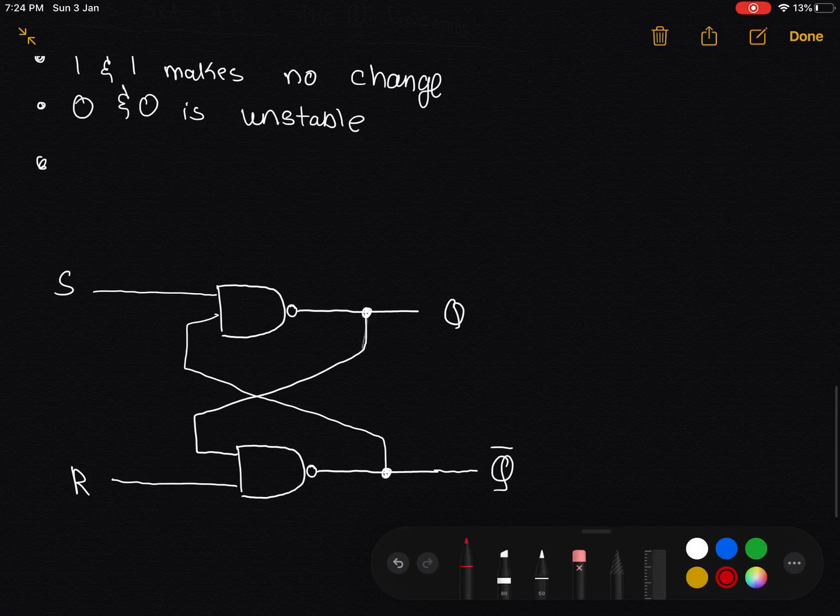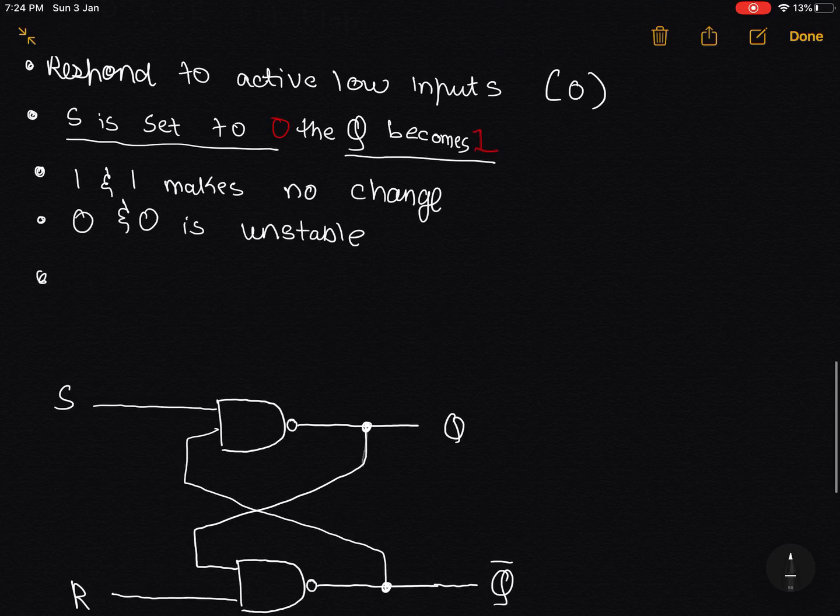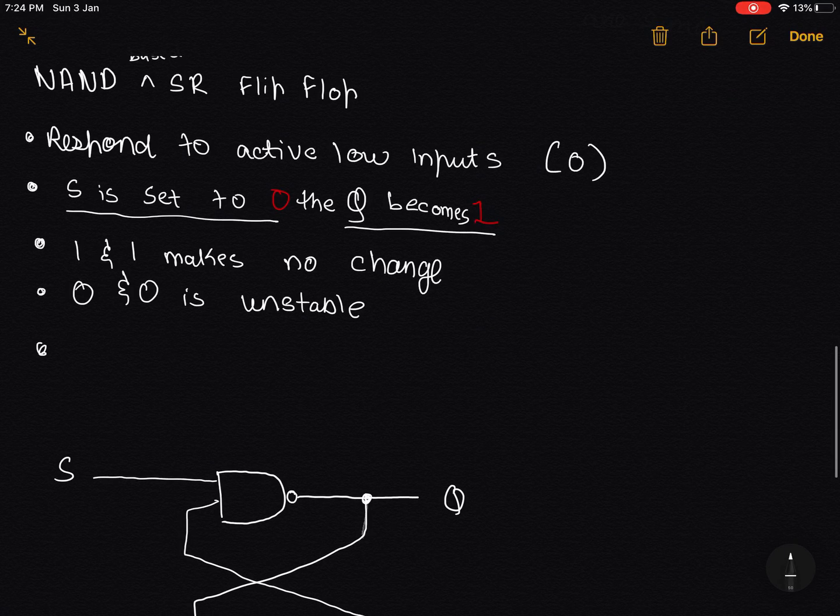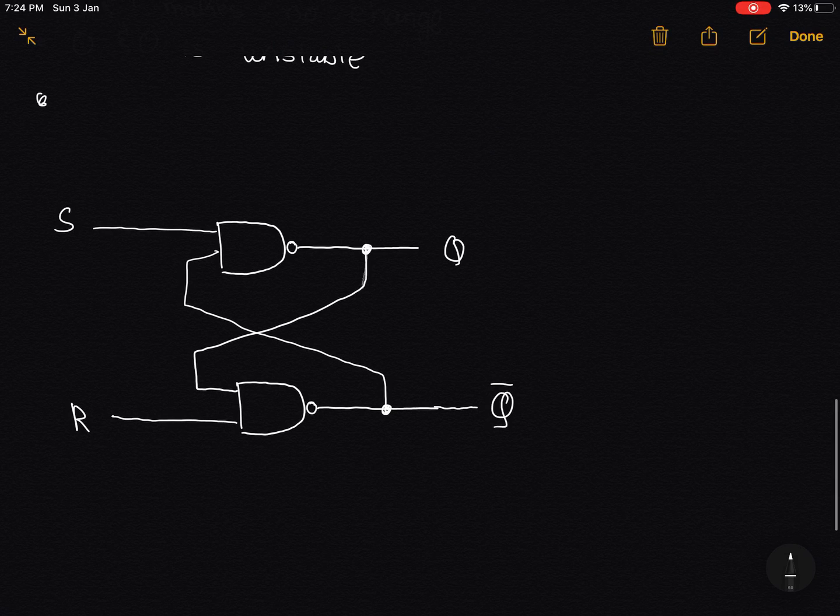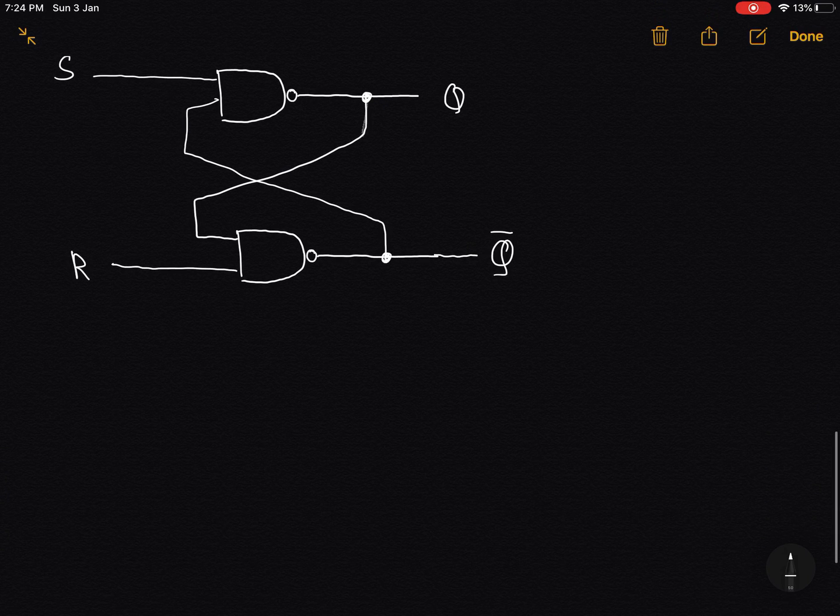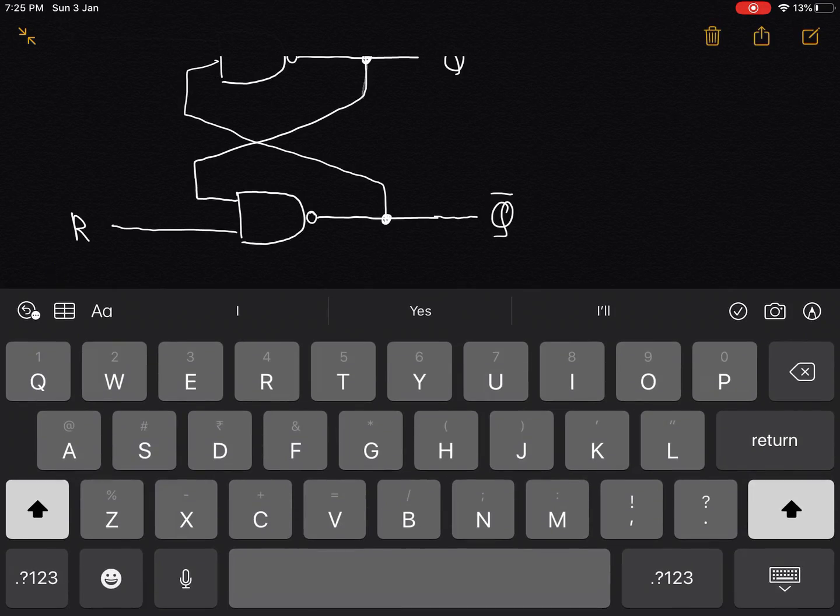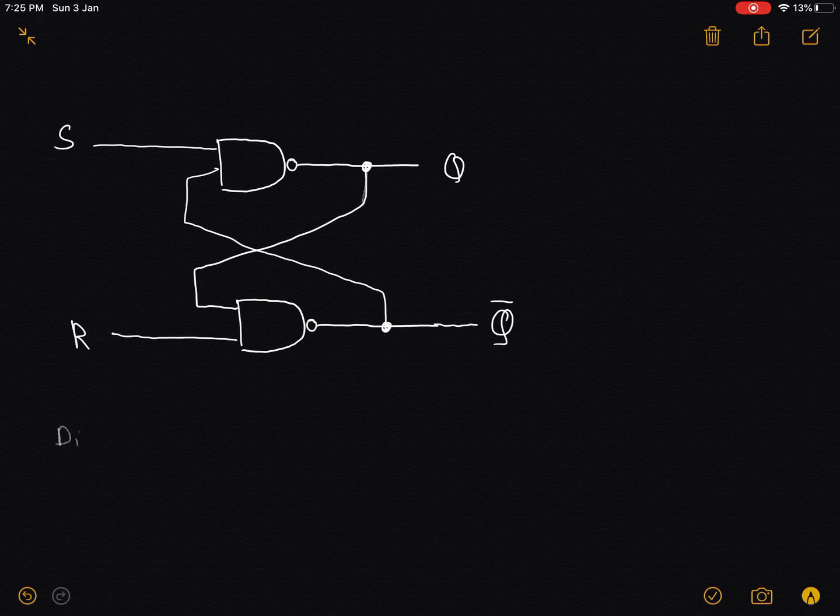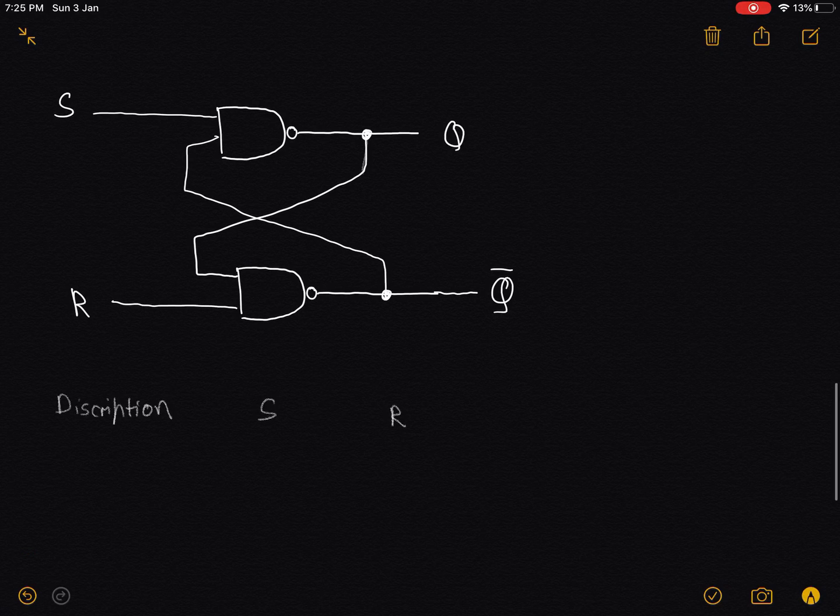So I'll actually be putting notes down below in the description. You could go through that, and those are pretty neat notes. I hope once you're done with this video, it'll be easy for you to go through them and understand what I'm saying over there. So let's just make the truth table for NAND-based flip-flops now. Description, the S state, the reset state, the Q, and the Q complement states.